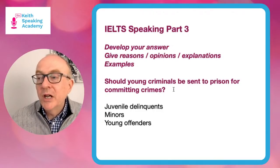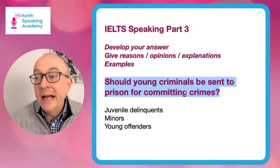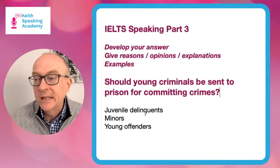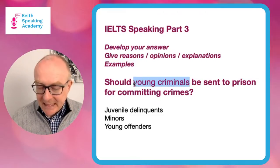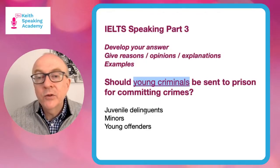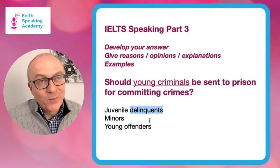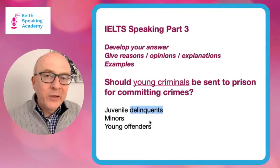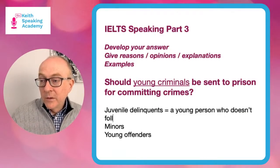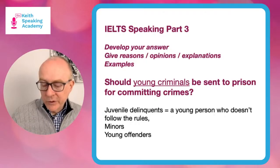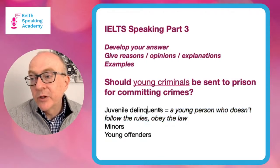The first question: should young criminals be sent to prison for committing crimes? With this question, we've got 'young criminals.' There are useful synonyms here - we can talk about 'juvenile.' Juvenile comes from Latin and means young. And 'delinquent' is a criminal or a person who does bad things - doesn't obey the rules, doesn't follow the law. So a juvenile delinquent is a young person who doesn't follow the rules. Can you say that? Juvenile delinquent.